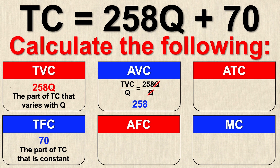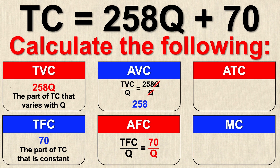For average fixed cost it's similar. Average fixed cost equals total fixed cost divided by Q, and since total fixed cost is 70, average fixed cost is 70/Q. You might wonder why there are still Q's in the equation — that's because in this problem we haven't been told the quantity being produced. At the end of the video I'll give you a Q value so you can practice substituting it in.